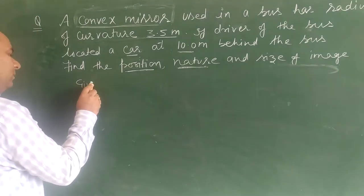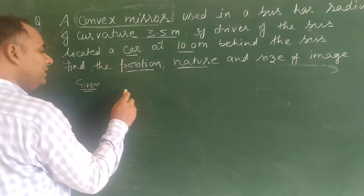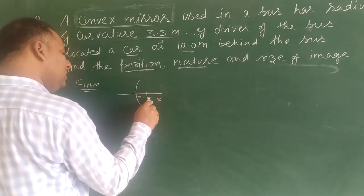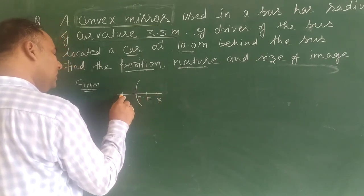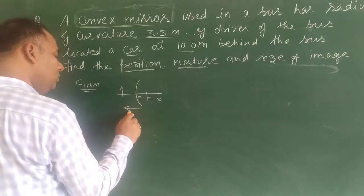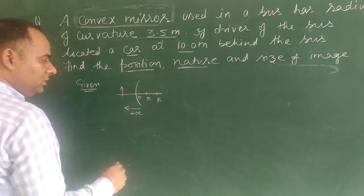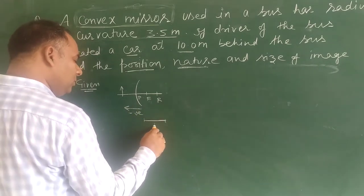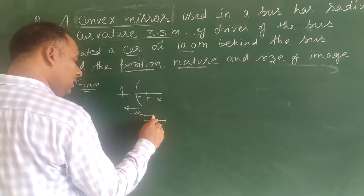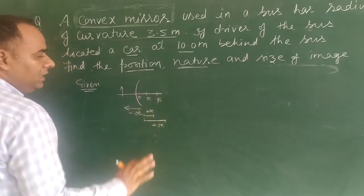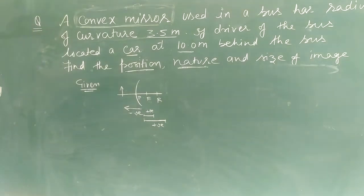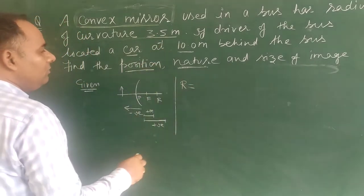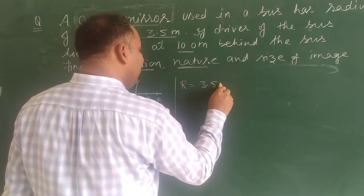First, let us note what is given. We have a convex mirror here. For a convex mirror, the radius of curvature and focal length are positive, while the object distance is negative — this is the sign convention. The radius of curvature given is 3.5 meters.